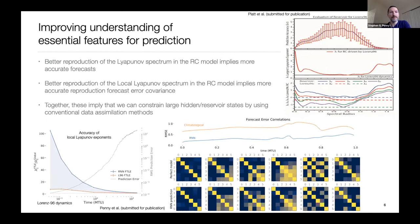Better reproduction of the Lyapunov spectrum in reservoir computing implies more accurate forecasts. Better reproduction of the local Lyapunov spectrum — calculated over a short time period local to the forecast — implies more accurate forecast error covariance, describing short-timescale uncertainties. Together, these allow us to constrain large hidden reservoir states using conventional data assimilation methods, because we only need to constrain the low-dimensional unstable growing space.